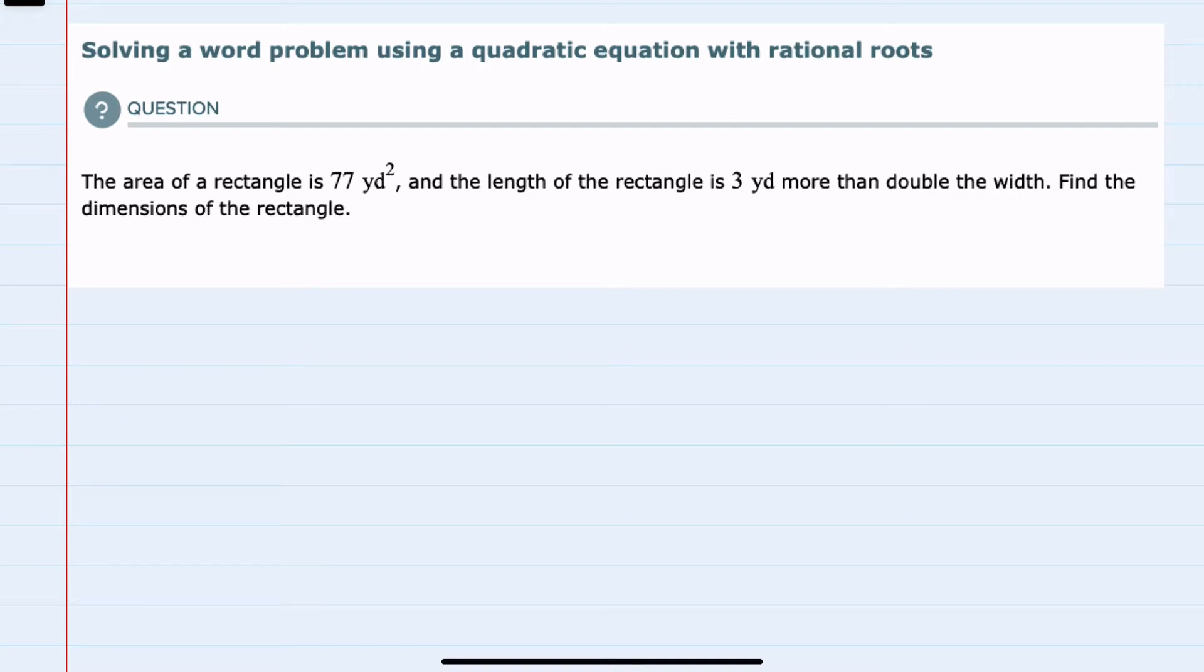For this example, we're told that the area of a rectangle is 77 yards squared, and the length of the rectangle is 3 yards more than double the width. Find the dimensions of the rectangle.